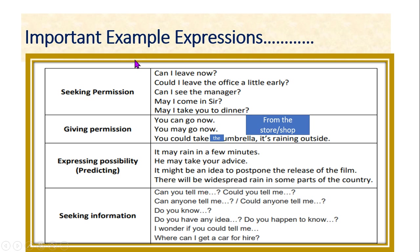These are the SSE examination model identifying expressions to focus on. In examinations, expressions under column B are listed and we need to select the appropriate one. 'Can I leave now?', 'Should I leave the office a little early?', 'Can I see the manager?', 'May I come in?', 'May I take you to dinner?' - here, 'can' and 'may' placed at the beginning of a sentence ending in a question mark can mean seeking permission. Please understand the placement of the modal verb and the type of question to identify the underlying expression.